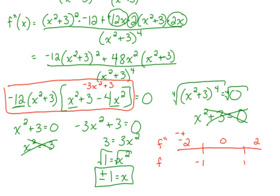When I plug in negative 2: negative 12 is a negative number; negative 2 squared plus 3 is positive — so negative times positive. Then negative 2 squared is positive 4, times negative 3 is negative 12, plus 3 is still a negative number. So I have negative, positive, negative — that overall gives me a positive, so the function is concave up on that interval. When I plug in 0: negative 12 is negative, 0 plus 3 is positive, and for the negative 3x squared plus 3 term that gives positive 3. So negative times positive times positive is negative — concave down. Plugging in positive 2 gives a similar result to negative 2: negative, positive, negative — concave up.